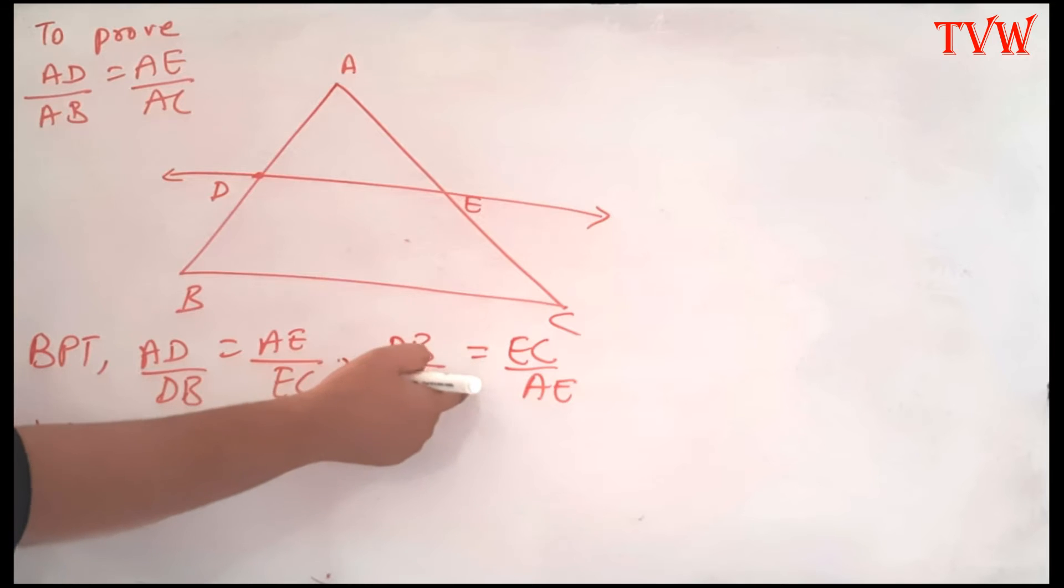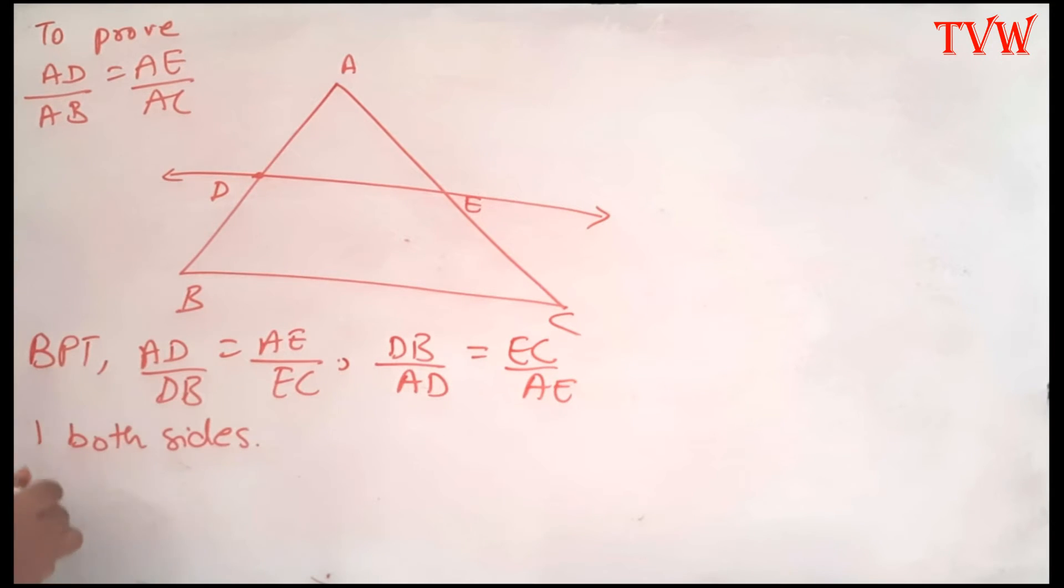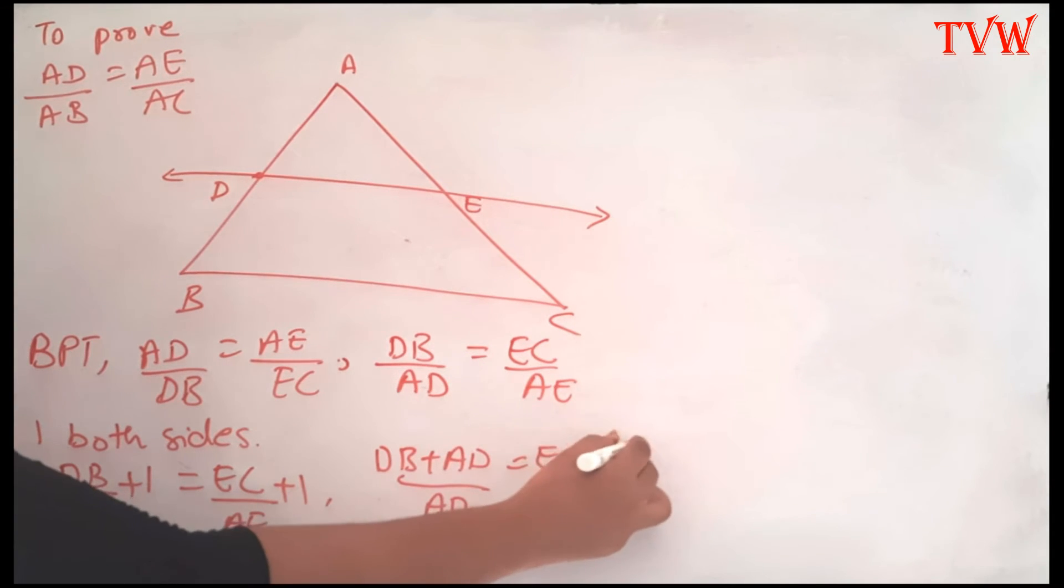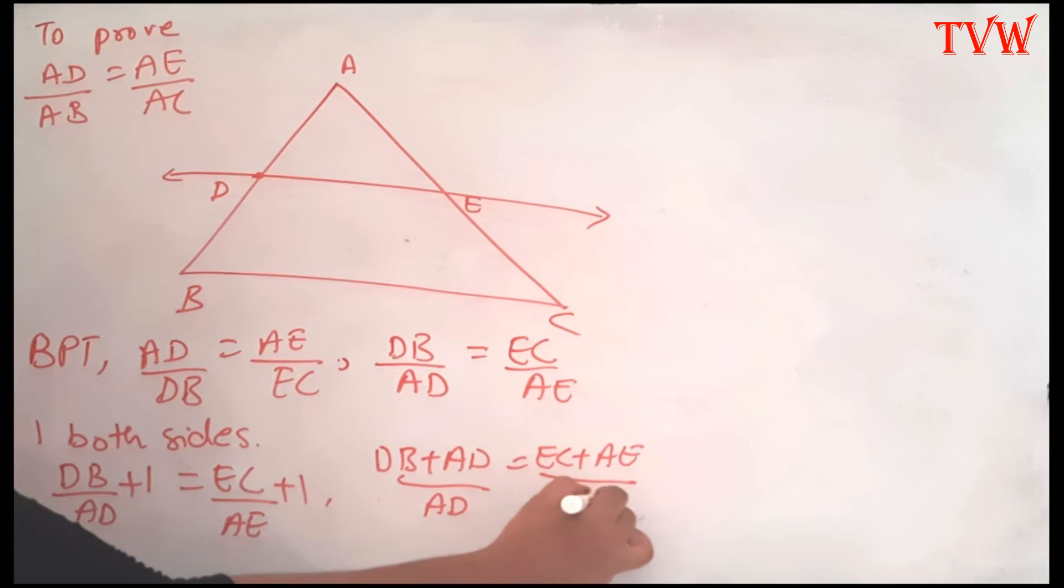Now, I am going to add one on both sides to this equation here. So it is going to be DB divided by AD plus 1 equals EC divided by AE plus 1. This is going to give me DB plus AD divided by AD equals EC plus AE divided by AE.